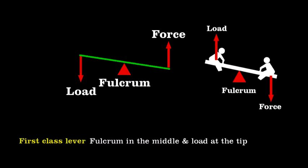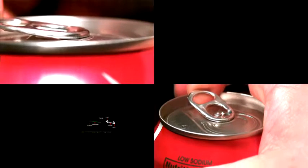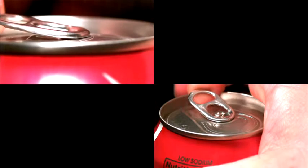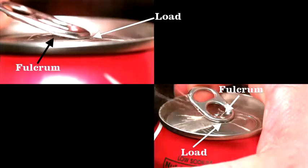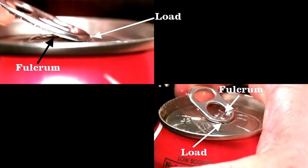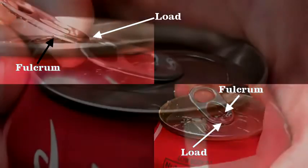Now, let's look at how this applies to a tab on a pop can. The tab starts as a second class lever where the tip of the tab is the fulcrum and the rivet the load, but then changes the moment the can vents to a first class lever where the load now is at the tip and the fulcrum the rivet.